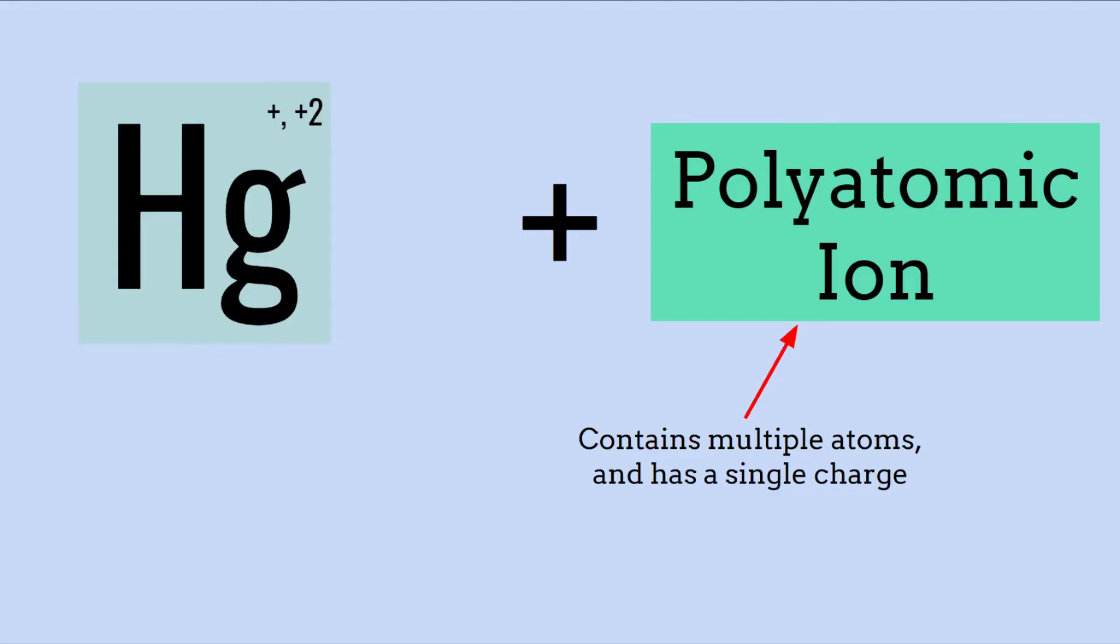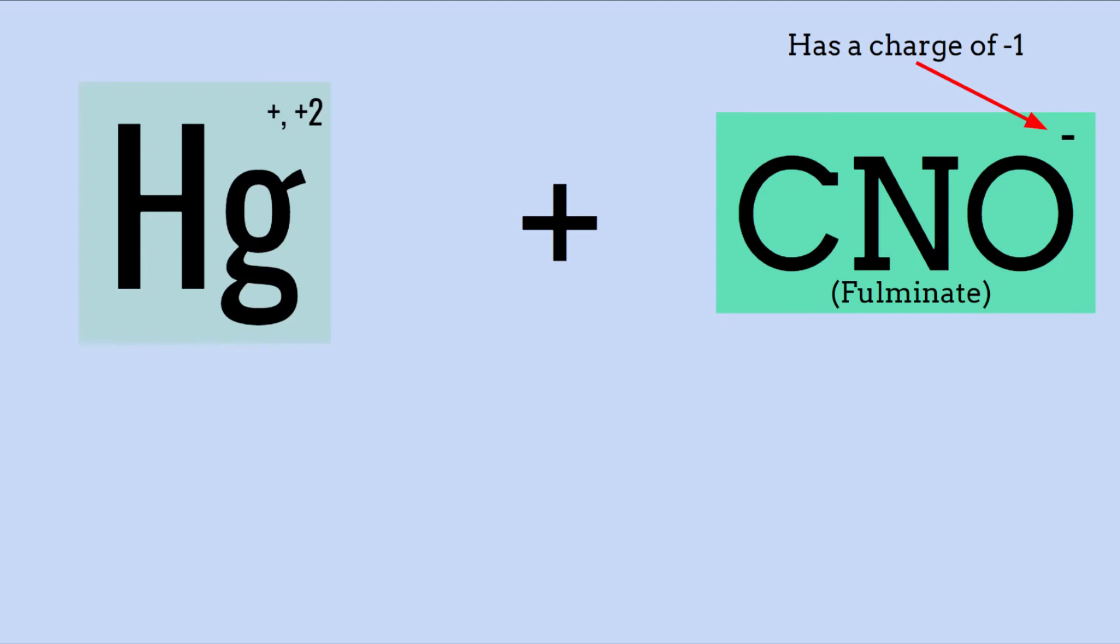Returning back to the fulminated mercury. This is a bond between mercury and a polyatomic ion, meaning there are multiple atoms and the group of them has one charge. In this case, the ion is fulminate, a combination of carbon, nitrogen, and oxygen. It has a charge of negative one.